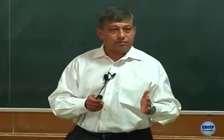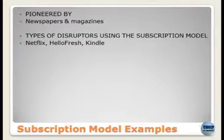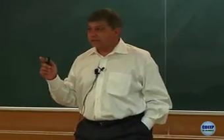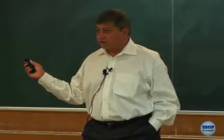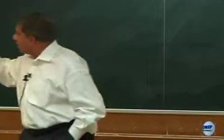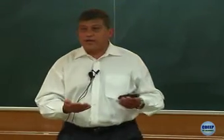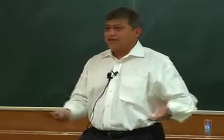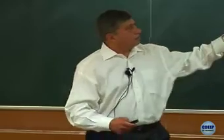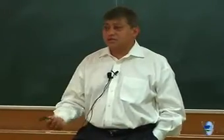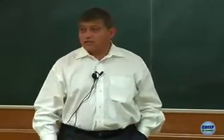The subscription model has a lock-in mechanism, and the revenue stream over time is much greater than the one-time price of the product. What are some examples? It was pioneered by newspapers and magazines — we didn't have fancy names for it, it was just a monthly fee for your newspaper. The people currently using subscription models include Netflix, Kindle, and many others. They also have advertising as another source of revenue, but they charge you every month to subscribe — that's the subscription fee.